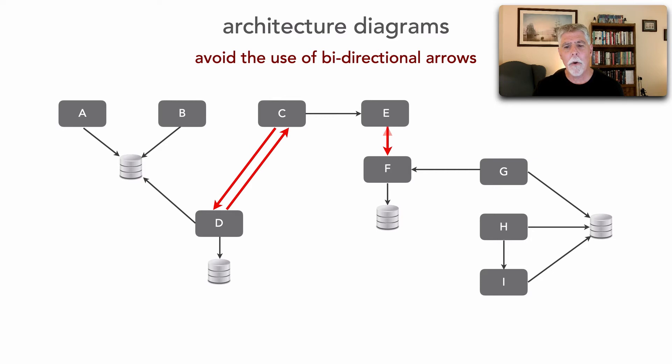I focus on the request. In other words, what's the context of the arrows I'm showing? A request is made for data from E to F. But in this case, the particular architect really wanted to show the fact that F returns information back.